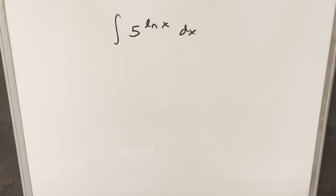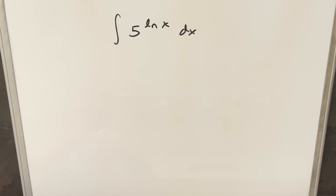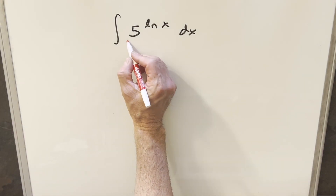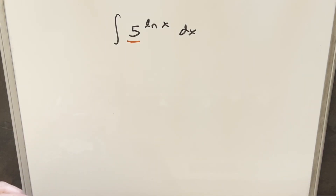We have here today an interesting integral. We've got the integral of 5 to the ln x dx. This is actually a pretty easy integral after you've seen it a couple times, but the first time it can be a little bit tricky, so I wanted to go over it. The issue we have here is we really would like our base to be x, or we'd like to transform this somehow with algebra.